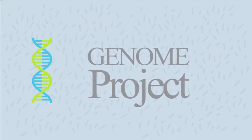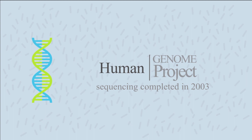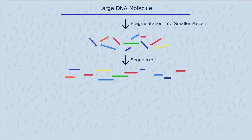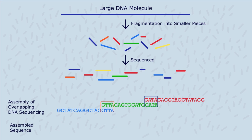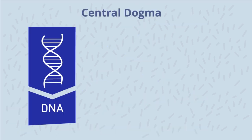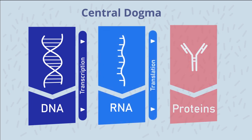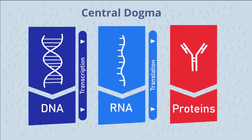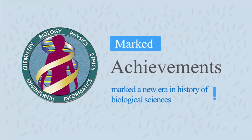It all began when the human genome project, which sequenced all human DNA, was completed in 2003. At first, it was a massive step forward for humanity. Enormous amounts of significant research discoveries were made, accumulating complex biological data related to how DNA encodes proteins and how this process is regulated in human beings. The achievements of the project marked a new era in biological sciences and had tons of technological applications.